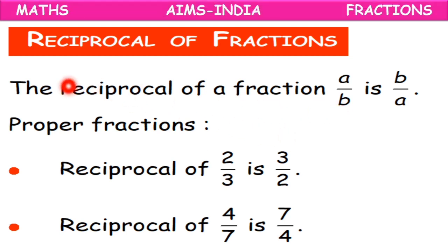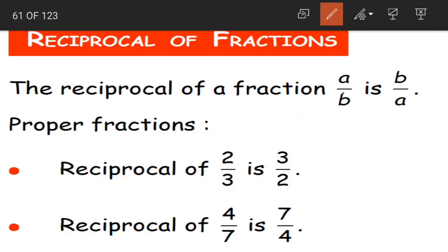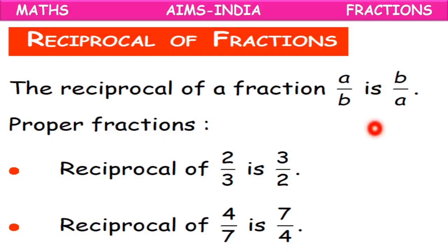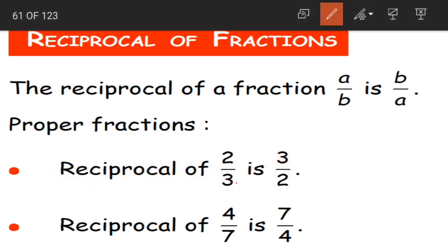Now, reciprocal of fractions. If we have a fraction A/B, its reciprocal is B/A. B is the denominator but in the reciprocal it becomes the numerator; A is the numerator but in the reciprocal it becomes the denominator. It's just interchanging the places. For example, the reciprocal of 2/3 is 3/2, and the reciprocal of 4/7 is 7/4.